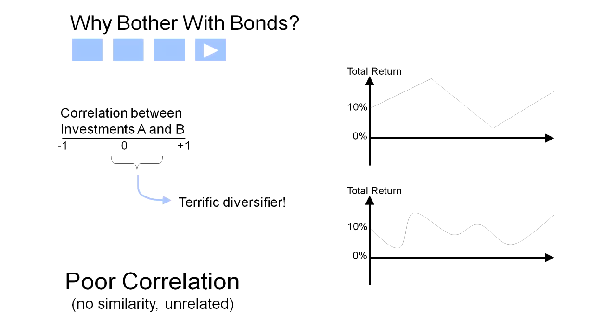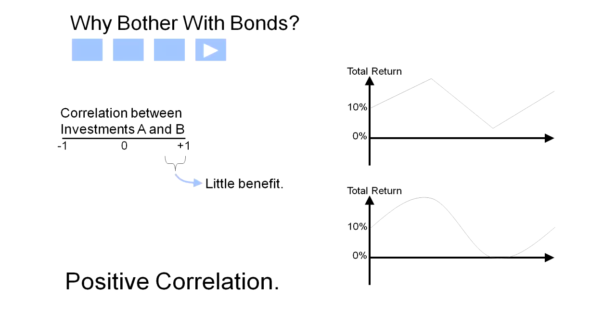Uncorrelated or poorly correlated means that they are independent from each other, and this is terrific. Things that move in the same direction at the same time are positively correlated.